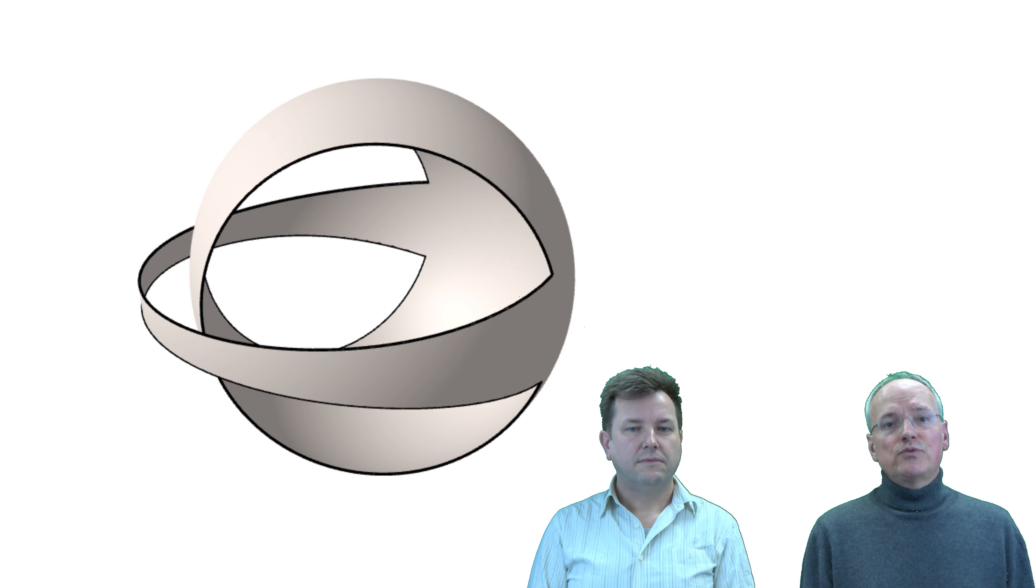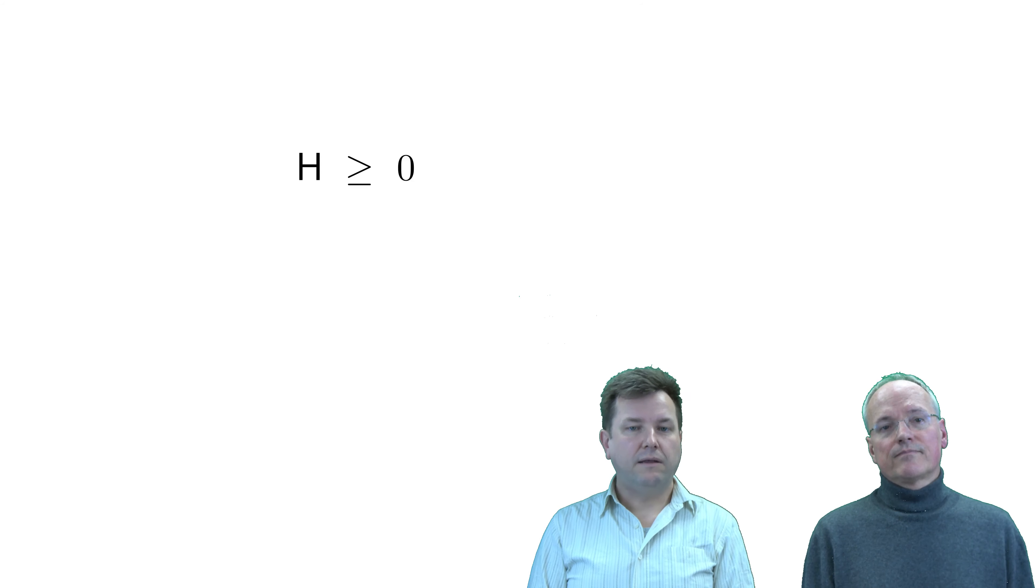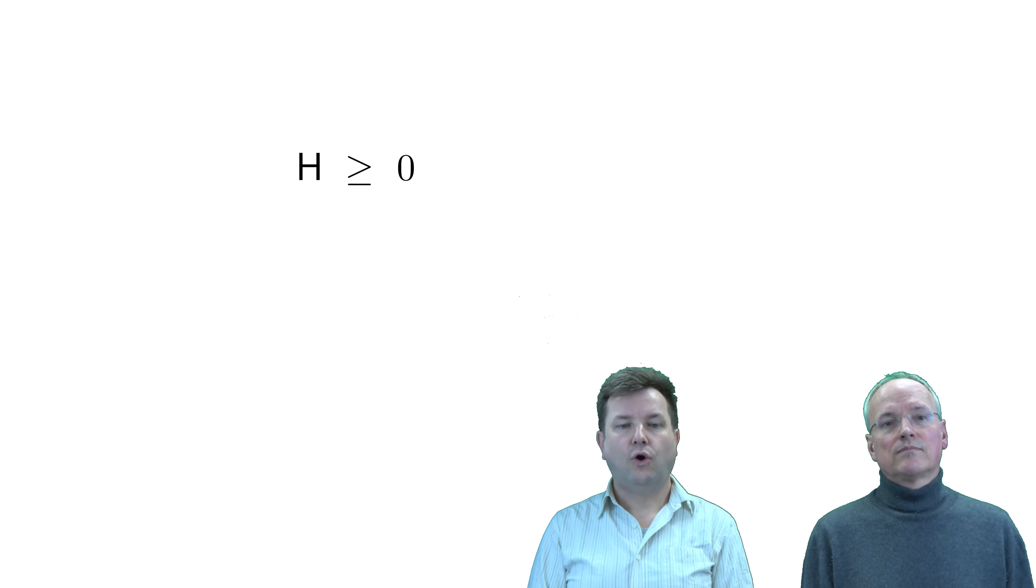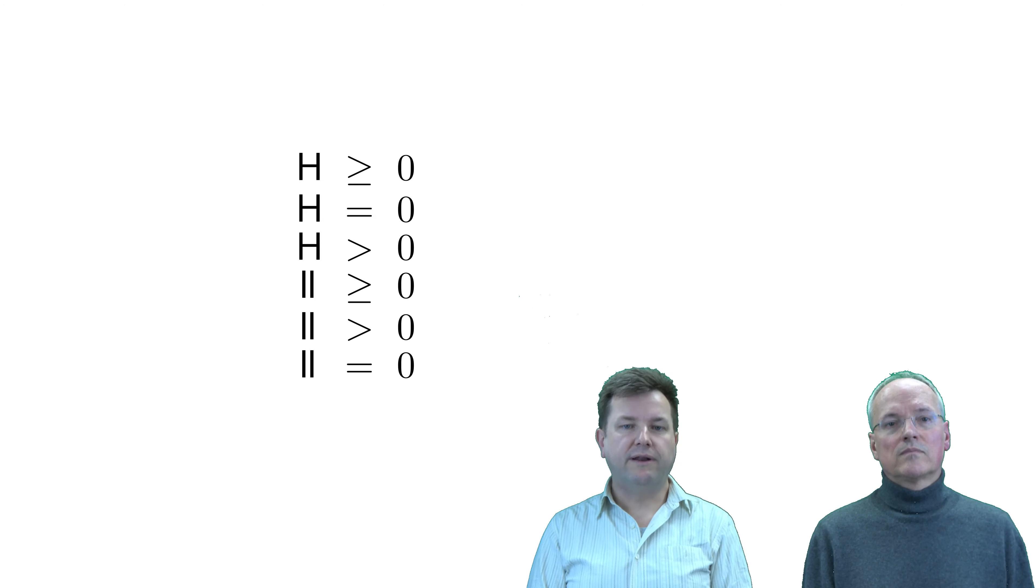There are many options to do this. We can demand that the mean curvature of the boundary is non-negative, or zero, or strictly positive. Or we may ask for the second fundamental form to be positive semi-definite, or positive definite, or zero. In other words, the boundary is totally geodesic.